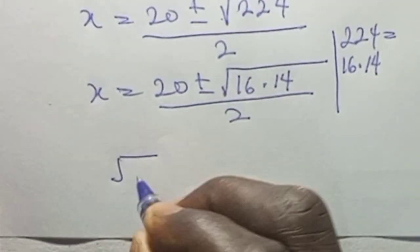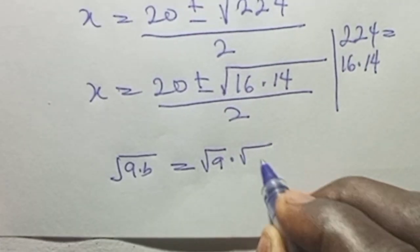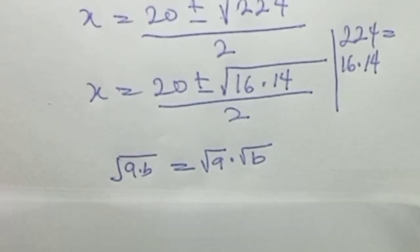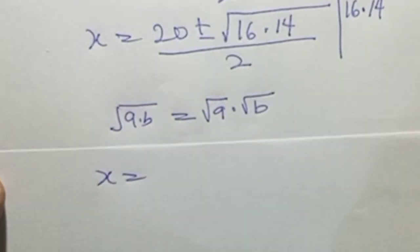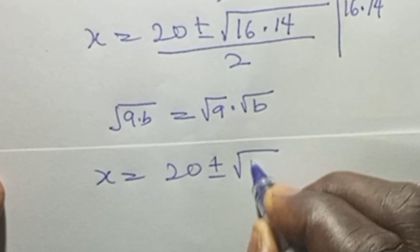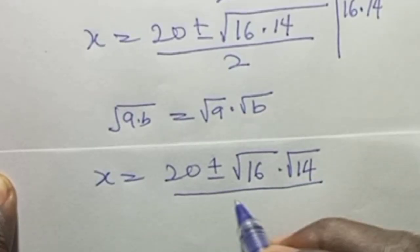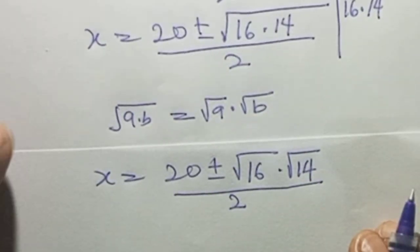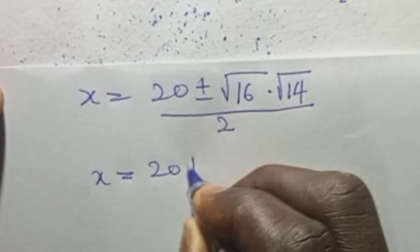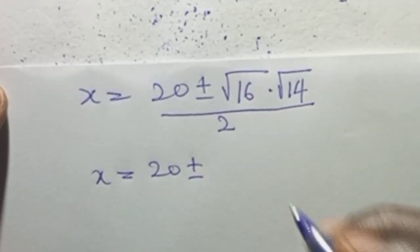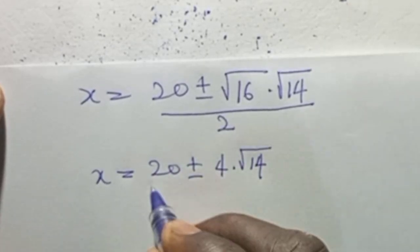We use the rule that the square root of a times b equals square root of a times square root of b. So s equals 20 plus or minus square root of 16 times square root of 14, all over 2. Since the square root of 16 is 4, this becomes s equals 20 plus or minus 4 square root of 14, all over 2.